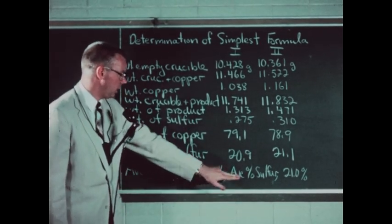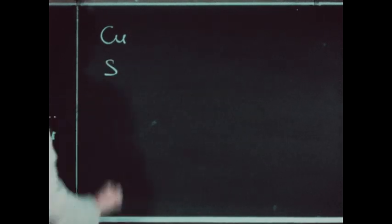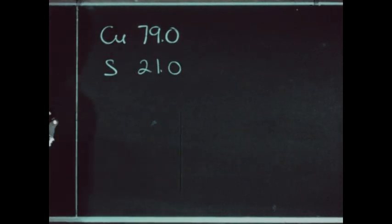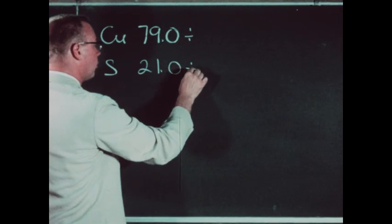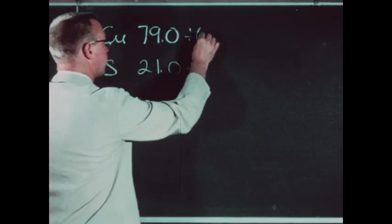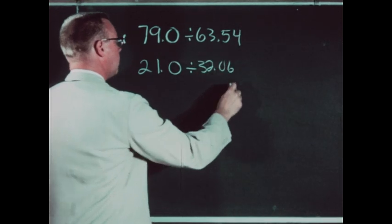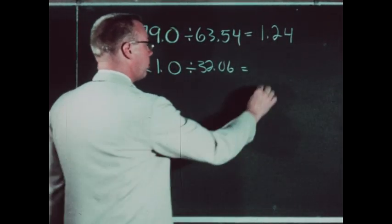We'll now use these figures in the determination of the simplest formula of this sulfide of copper. In this compound, the weight ratios are 79 for copper and 21 for sulfur — this is our experimental result. To reduce these weight ratios to atom ratios so we can write the formula, we must divide these two numbers by the atomic weights of the elements. The atomic weight of copper is 63.54 and the atomic weight of sulfur is 32.06. Carrying out this calculation, we get 1.24 and 0.655.